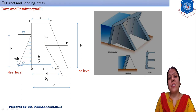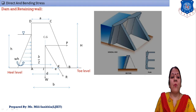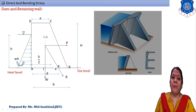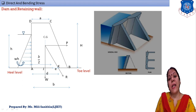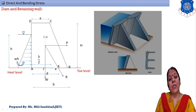The small 'h' is equal to the height of the water level, and the capital 'H' is equal to the height of the dam. 'a' is equal to the top width of the dam, 'b' is equal to the bottom width of the dam. The front side of the dam is known as the toe, and the back side where water is stored is known as the heel.